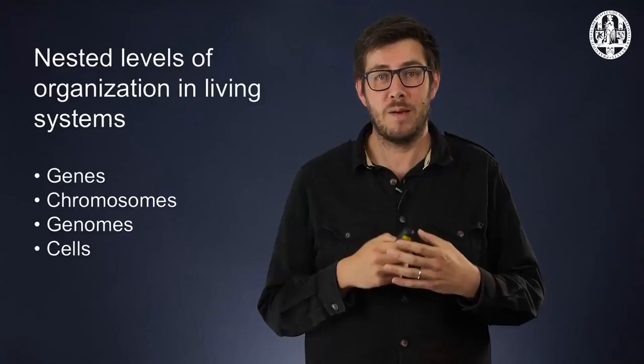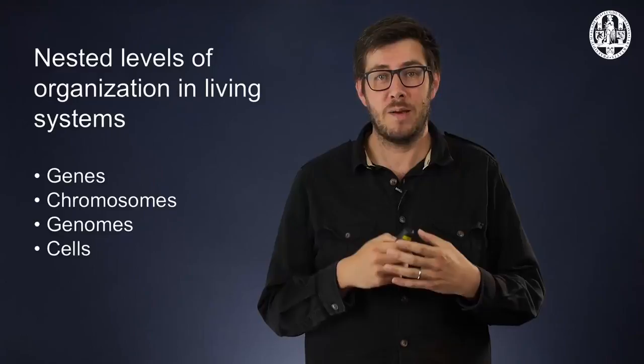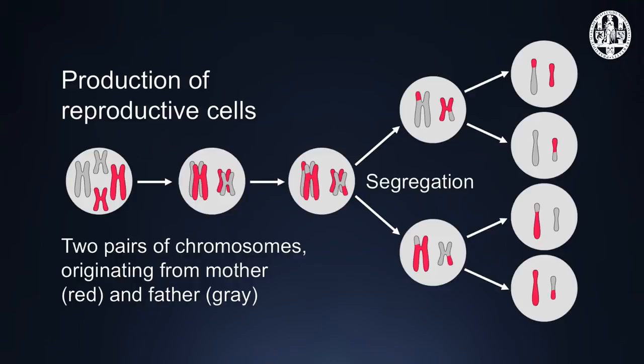Diploid organisms, like us, with a pair of each chromosome, reproduce sexually by making haploid reproductive cells. In general, new cells in our bodies are made by splitting an existing cell and distributing copies of the chromosomes over the two resulting daughter cells. Reproductive cells are also made by splitting existing cells, but this normal cell division is preceded by a step that involves the more or less random segregation of each pair of chromosomes, which are then distributed over daughter cells.